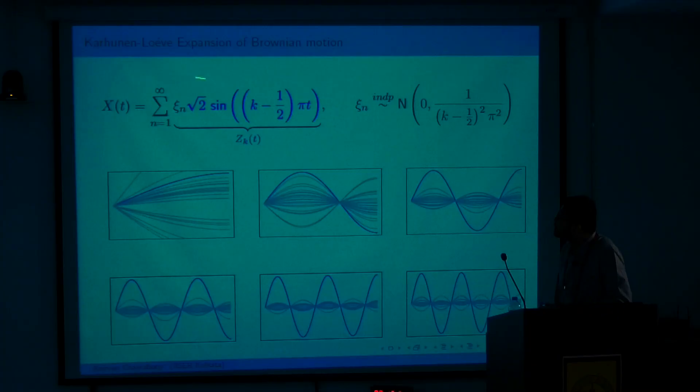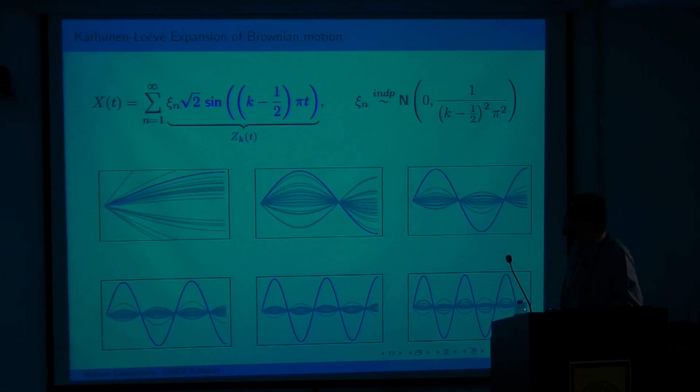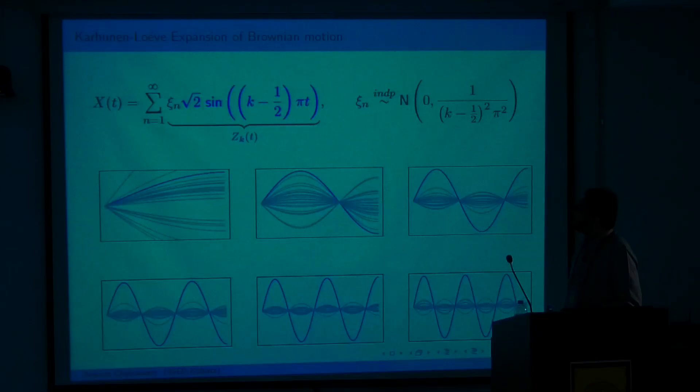As a toy example, consider the Karhunen-Loève expansion for standard Brownian motion. The basis functions φ_n(t) turn out to be scaled sinusoidal functions, and the scores ξ_n are independent normal random variables. Looking at the partial sums Z_k(t), we start with smooth, low-frequency sinusoidal components and then add progressively higher-frequency components as n increases. Because Brownian motion is continuous but nowhere differentiable almost surely, it is precisely this infinite sum of sinusoidal components that produces that property.